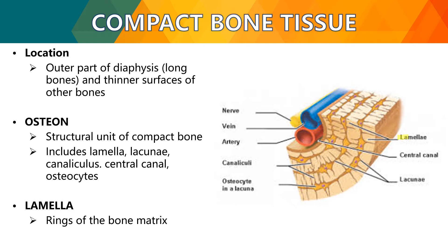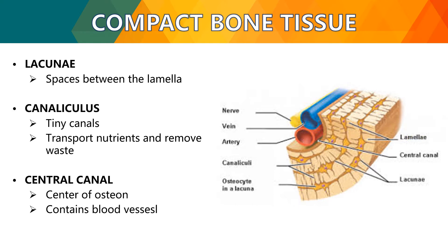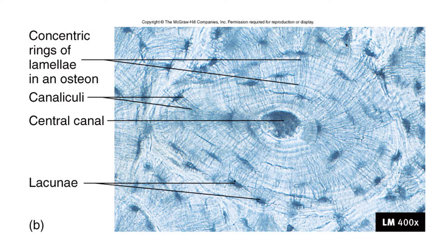The lamella consists of rings of bone matrix. The lacunae are the spaces between the lamellae. Canaliculi are tiny canals used for transporting nutrients and removing waste. The central canal is the center of the osteon and contains blood vessels. Looking at a cross-section image, you can see the canaliculi, the central canal, lacunae housing the osteons, and the concentric rings of lamellae — comparable to a cross-section of a tree with a central part and concentric rings around it.